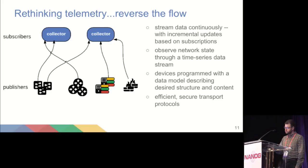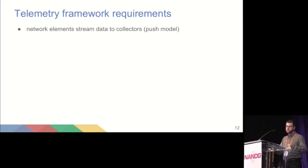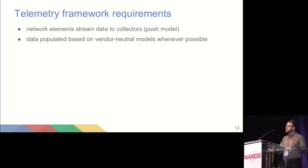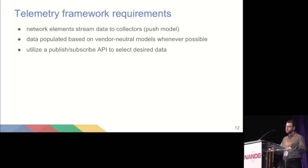Some of the requirements we're putting forward: a push model where upstream devices will stream their data to a network collector. That data is populated on the device in a data model that is vendor-neutral whenever possible — so an interface traffic stat counter on a Juniper device is an interface traffic stat counter on a Cisco or Arista device, whenever possible to be standard. When that has to deviate, Anish is going to talk in more detail about how the models can be augmented to have vendor-specific knobs. A publish-subscribe model using an API — you tell the device what you're interested in, at what frequency, and where it should send it. Set it and forget it.